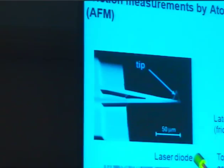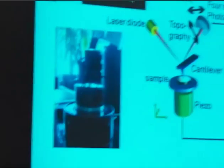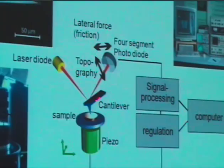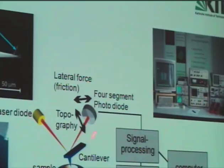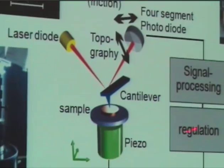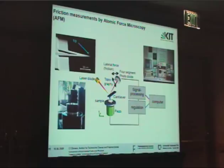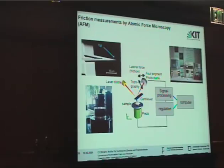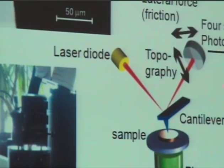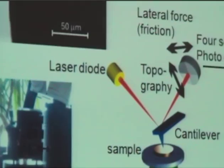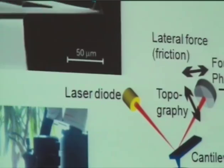Atomic force microscopy is a method with which you can image surfaces. The sample is scanned with a tip that has a diameter of about 50 nanometers, located at a flat spring, and the sample is scanned under this tip. The force between the tip and the sample is detected by bending of the cantilever. For this purpose, a laser beam is focused on the backside of the cantilever and reflected to a four-segment photodiode where it creates a photocurrent. If topography changes occur, the hitting point on the photodiode changes, producing a topography signal.